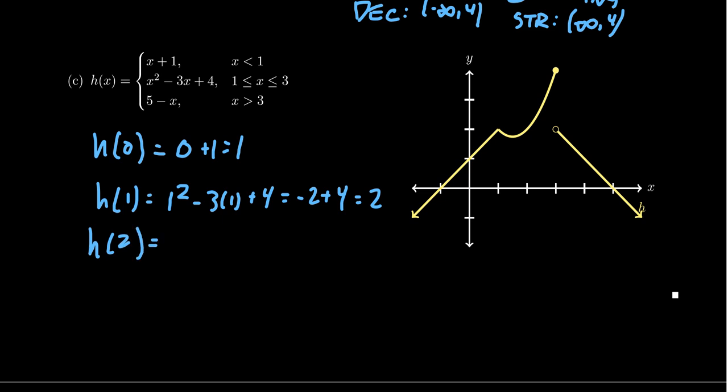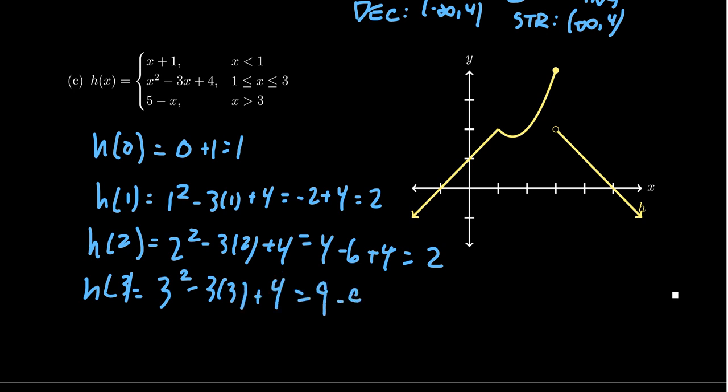What if you want to do h of 2? Well, h of 2 falls in this middle compartment. So you plug in 2 right there. 2 squared minus 3 times 2 plus 4. We get 4 minus 6 plus 4, which gives us 2 again. h of 3, well, where is h of 3? Notice 1 and 3 are kind of significant for this function because these are the switching numbers. It switches behavior at 1 and it switches behavior at 3. Who decides what happens at 3? Well, that's because it's less than or equal to 3. It'll look like the parabola again. 3 squared minus 3 times 3 plus 4. You're going to end up with 9 minus 9 plus 4, which gives you 4 in that situation.